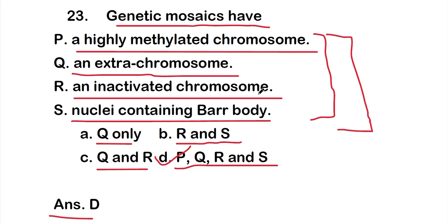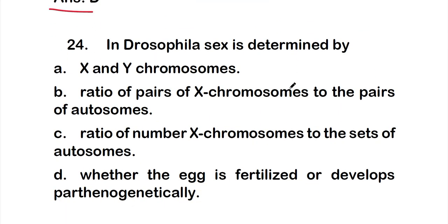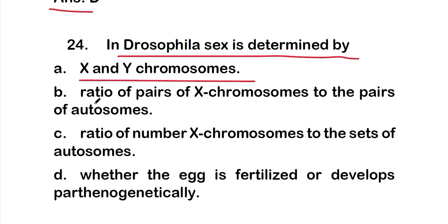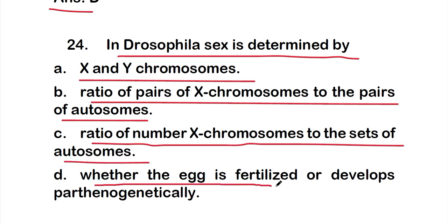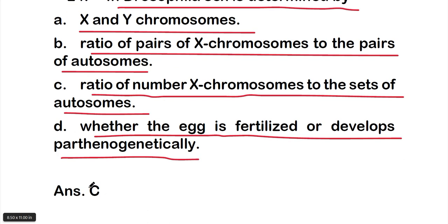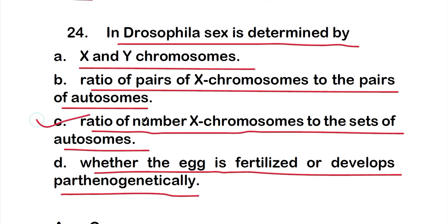Question 24: In Drosophila, sex is determined by — option A: X and Y chromosomes, option B: ratio of pairs of X chromosomes to pairs of autosomes, option C: ratio of number of X chromosomes to the set of autosomes, or option D: whether the egg is fertilized or develops parthenogenetically. The right answer is option C — ratio of number of X chromosomes to the set of autosomes.